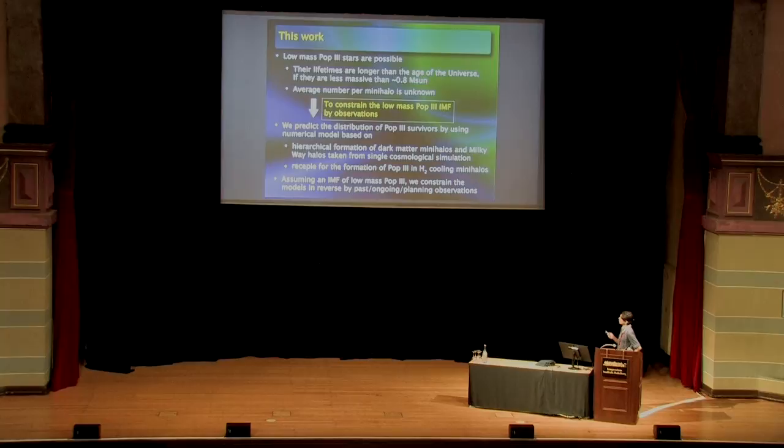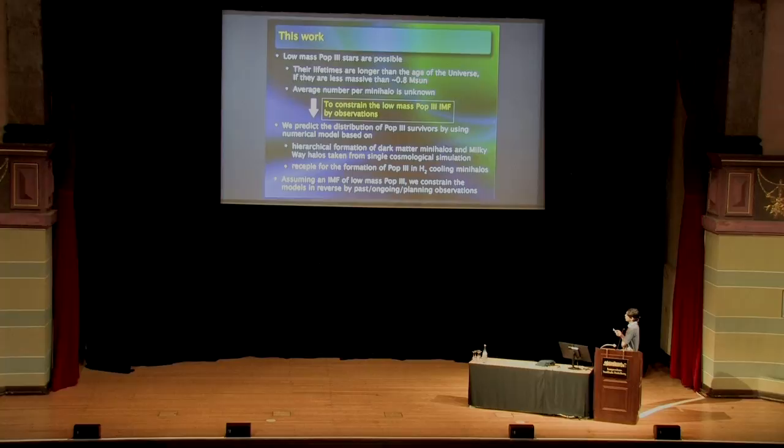For this purpose, we need to predict the distribution of Pop 3 stars in the context of Lambda-CDM. We use a numerical model based on hierarchical formation of dark matter mini-halos and Milky Way-halos taken from cosmological simulations, and combine it with a recipe for the formation of Pop 3 stars in H2-cooling mini-halos.